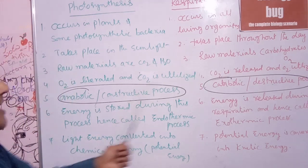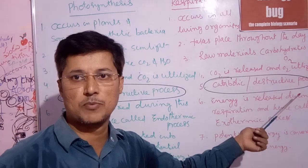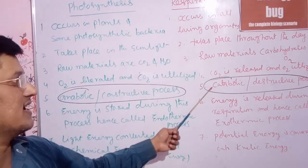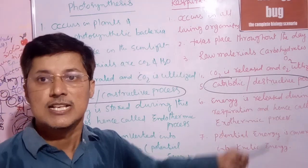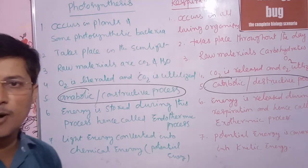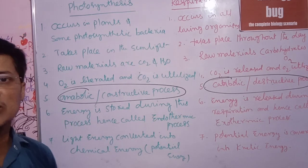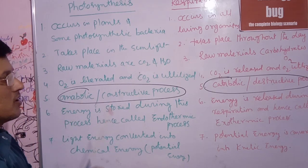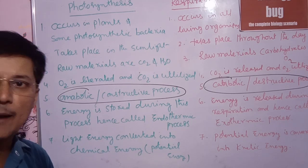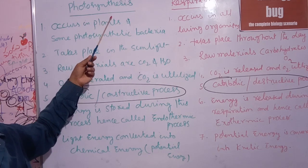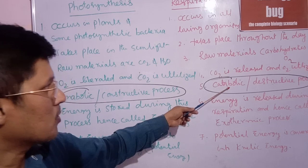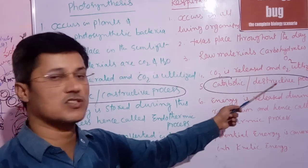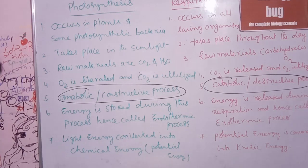Respiration is a catabolic process, also known as a destructive process. Glucose is broken down and energy is released — that's why it is called catabolic. Anabolism is the synthesis phase while catabolism is the breakdown process. In a catabolic process, carbohydrates are broken down and energy is released — that is why respiration is called a destructive process.